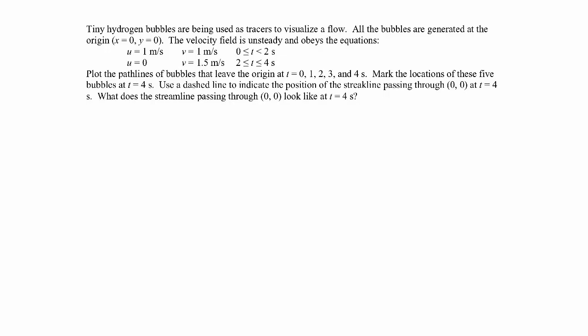In this problem, we are told that we have some tiny hydrogen bubbles that are being used as tracers to visualize the flow. That's a very common way to do flow visualization in water tunnels. All the bubbles are generated at the origin, so x equals 0, y equals 0. This is going to be a two-dimensional flow field. The velocity field is unsteady and obeys the following equation: from time 0 to 2 seconds, the x component is 1 meter per second and the y component is 1 meter per second. Then from 2 to 4 seconds, the x component is 0 and the y component is 1.5 meters per second.